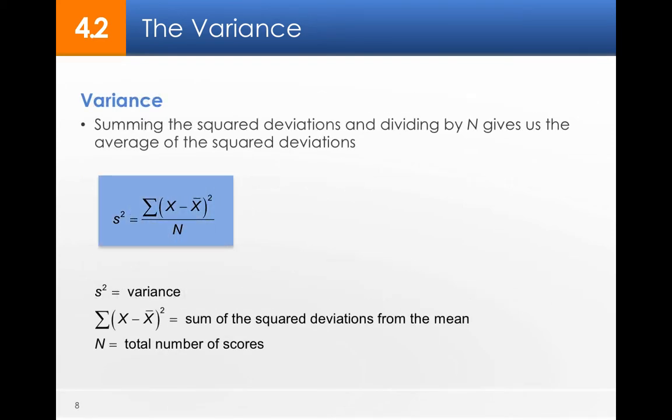Variance is taking the squared deviations, summing them up, dividing them by n. That gives us the average of the squared deviations. So S² stands for variance. Remember that weird looking E stands for sum of the score minus, right? So X is the score. X bar, remember, is our average. Square that, divided by n, the total number of scores.